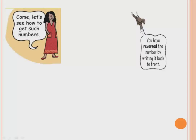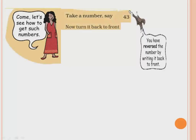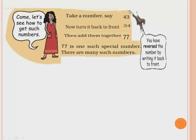Let's see how to get such special numbers. Take a number — say 43. Now turn it back to front. Always remember: back to front means reversing the number, writing it from back. So the reverse of 43 is 34. Then add them together: 43 plus 34 equals 77.